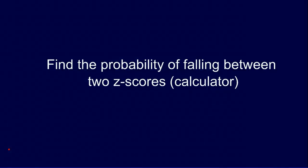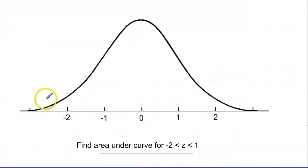If you want to find the probability of falling between two z-scores on a standard normal curve, you can do so by looking at values in a table printed in the back of a textbook. But it's a lot faster to just do so in your calculator. For example, a question might ask: